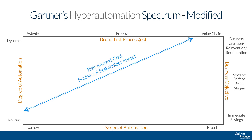As you move from the lower left-hand corner of the matrix up to the upper right-hand corner, your risk, reward, cost, and business impact go from being very low at the lower left-hand extreme to being very high at the point where the breadth of process and business objective axes conjoin. So, from this spectrum, what you want to do — just as we described in the business-driven hyperautomation infinite loop — is start with your business objective or digital ambition.